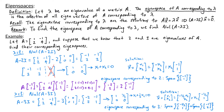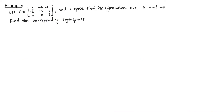Let's look at one more example. We have the 3×3 matrix A with entries 2, negative 4, negative 1, negative 2, negative 5, negative 2, 0, 0, 3. Suppose its eigenvalues are 3 and negative 6, and we want to find the corresponding eigenspaces. Starting with lambda equals 3, we want to find the null space of A minus 3I.